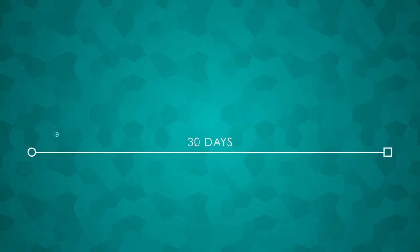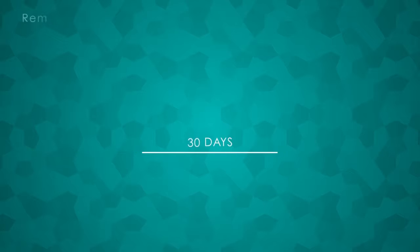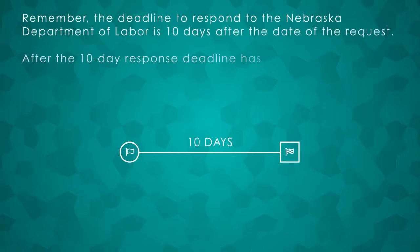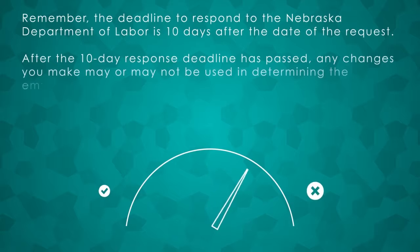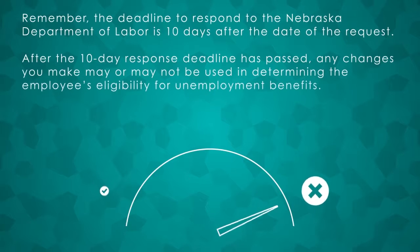During that period, you can correct the response or add additional information. Remember, the deadline to respond to the Nebraska Department of Labor is 10 days after the date of the request. After the 10-day response deadline has passed, any changes you make may or may not be used in determining the employee's eligibility for unemployment benefits.